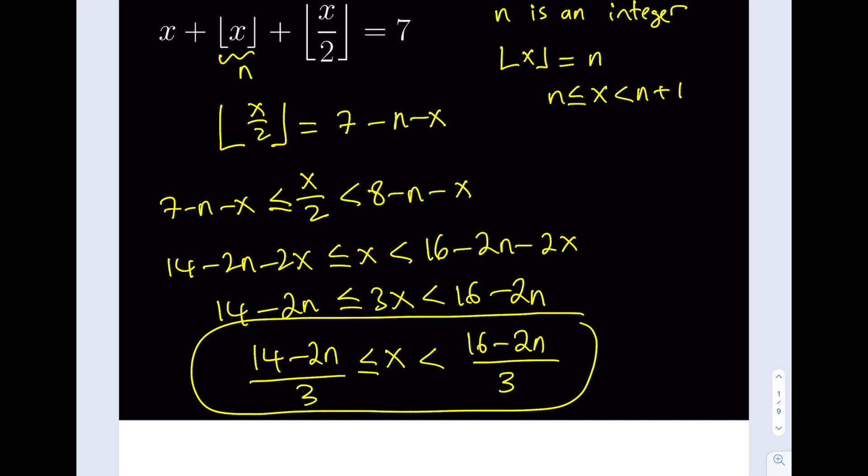Because at the beginning, remember, we assumed that the floor value of x is equal to n. That gave us another inequality. So what we're going to do now is we're going to put these two inequalities together and then find the value of x here or find the value of n, I should say, first.